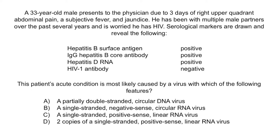In order to have gotten this question right, you needed a basic understanding of both hepatitis B virus and hepatitis D virus. The three days of right upper quadrant abdominal pain, a subjective fever, and jaundice are suggestive of acute hepatitis. Multiple male partners makes HBV, HDV, and HCV all possibilities because these can all be transmitted sexually. However, the labs really tell us what's going on. The first two labs are telling us that the patient has a chronic hepatitis B infection. The IgG hepatitis B core antibody test is perhaps the most important here because the presence of IgG tells us that the patient has a chronic infection, whereas the presence of IgM would indicate an acute infection. Therefore, we can conclude that this patient is a chronic carrier of HBV.